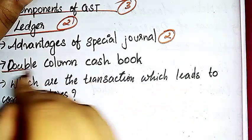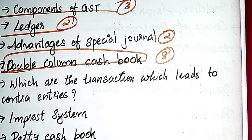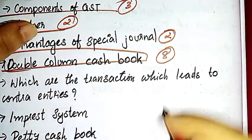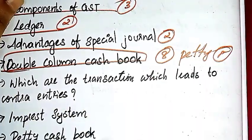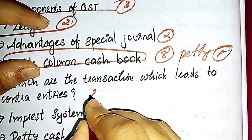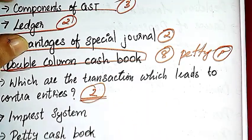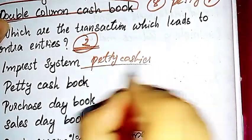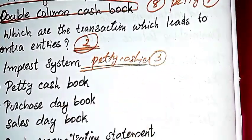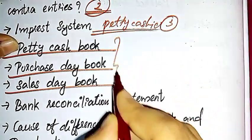Then double column cash book - we need to do some questions. If we have financial statements, we need to prepare cash book. Then write transactions showing contra entries. Then imprest system - if you want to learn about petty cash or imprest system, you need to prepare petty cash book, purchase book, and sales book.